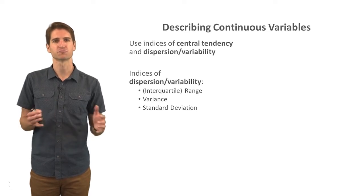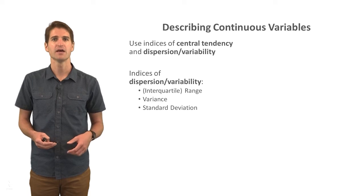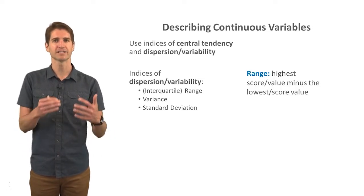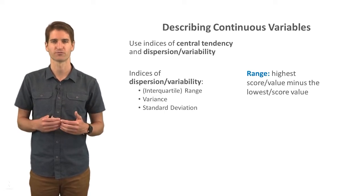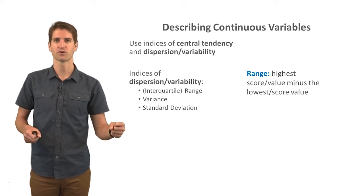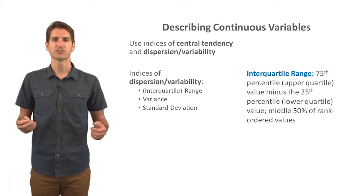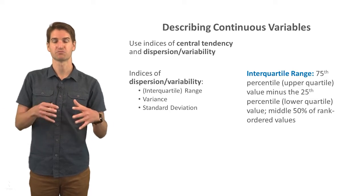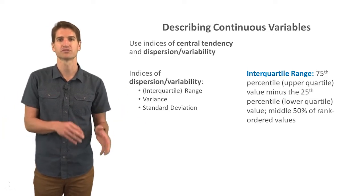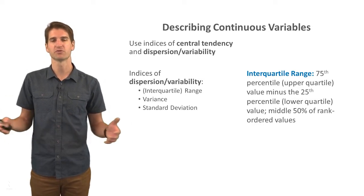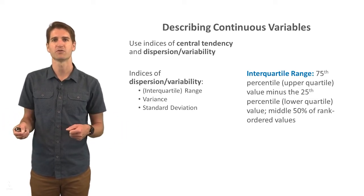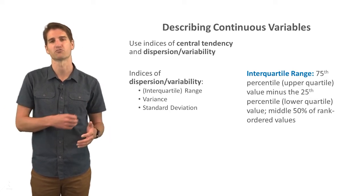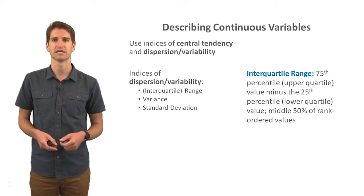Now let's move on to measures of dispersion and variability, away from measures of central tendency. Measures of dispersion and variability include the interquartile range or simply the range, as well as the variance and standard deviation. The range is simply the highest score minus the lowest score for a variable. The interquartile range is the 75th percentile value minus the 25th percentile value — it represents the middle 50% of the rank order values, the upper quartile minus the lower quartile.